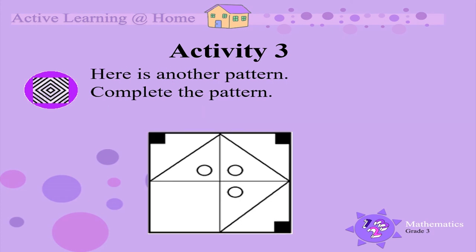Here is another pattern. Complete this pattern by filling in the empty square. There should be a line from one corner to the other corner. There should be a white circle in the top right-hand corner, and there should be a black square in the bottom left-hand corner. Now you make your own pattern like this. Start by drawing a large square, and then divide that large square into 4 smaller squares. Enjoy!